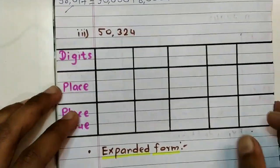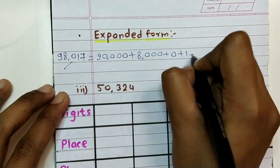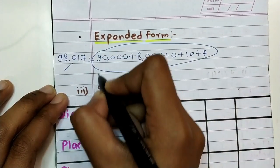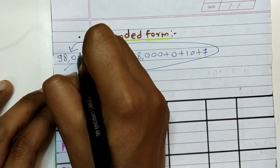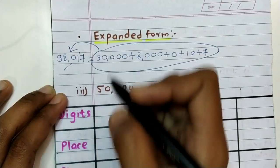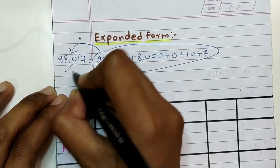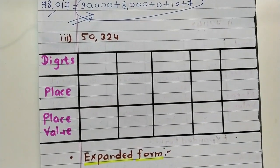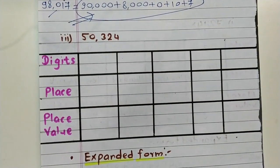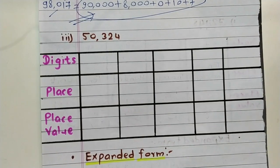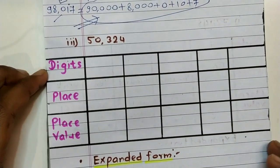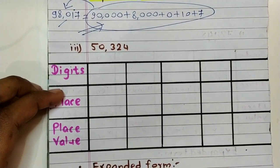Plus zero plus ten plus seven. If we add all these numbers, we get our given value and given number. This is our answer. Then our third example is 50,324.